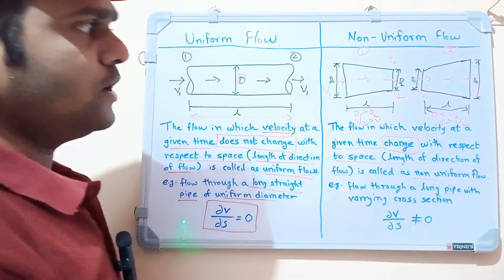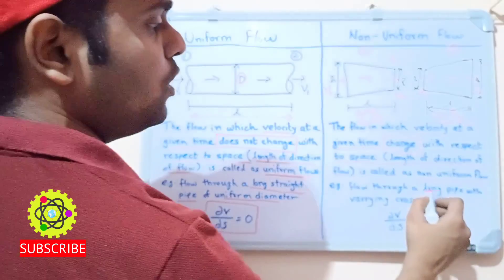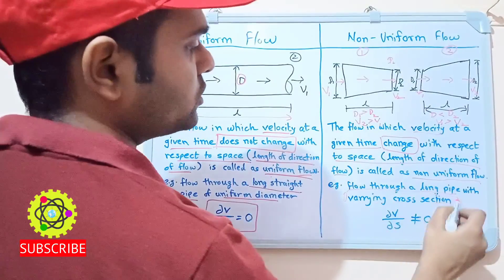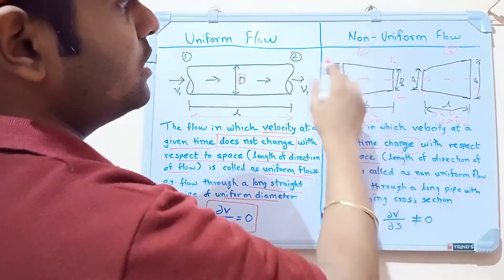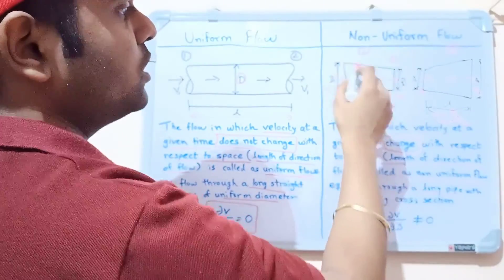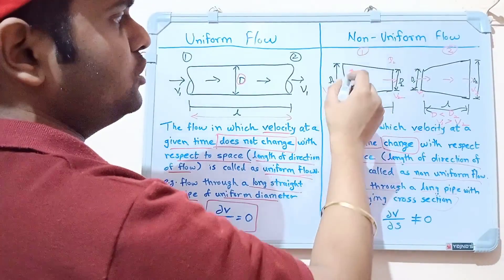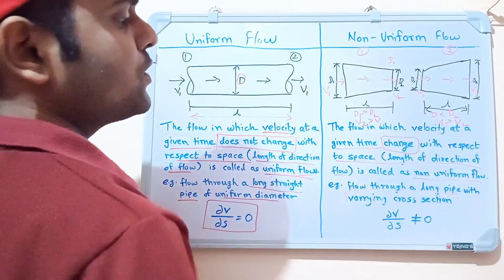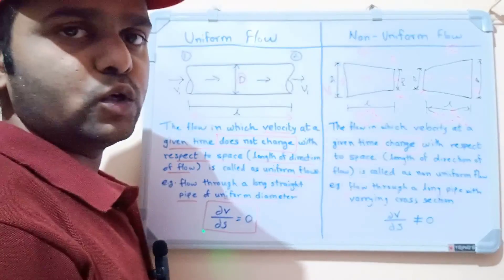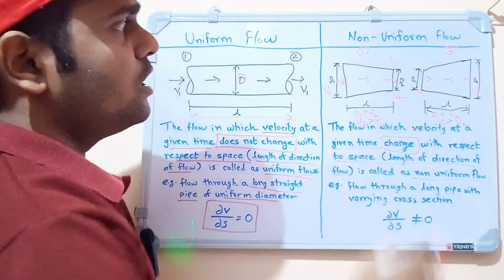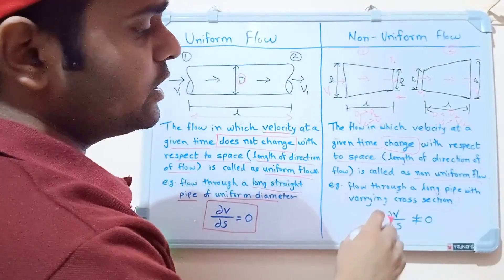Example: flow through a long pipe with varying cross-section, as we have seen — the cross-section of the pipe changes. The equation for non-uniform flow is ∂v/∂s ≠ 0, where ∂v is change in velocity and ∂s is change in displacement.